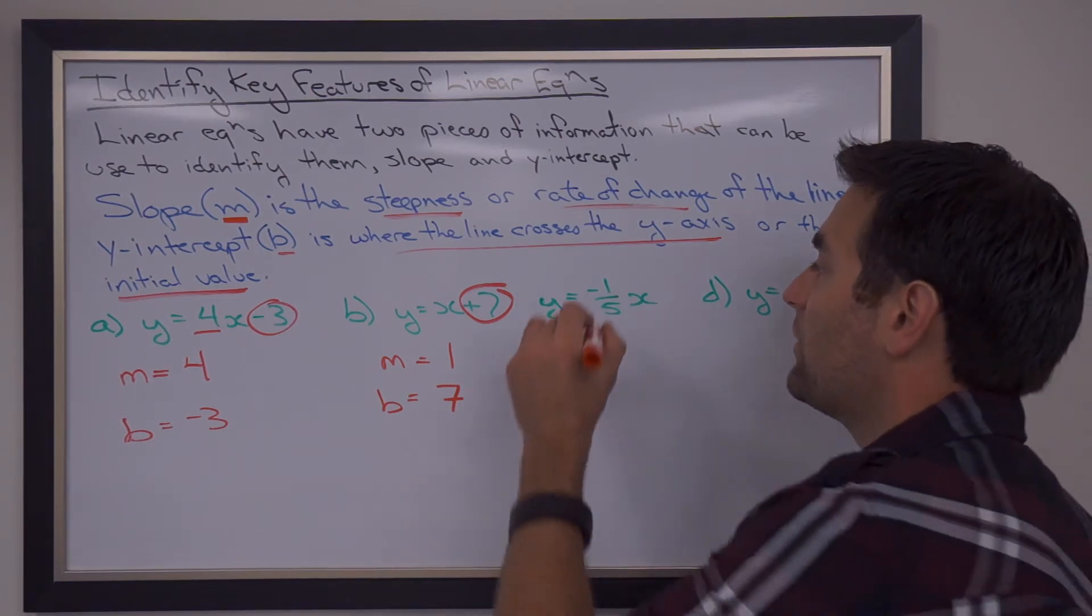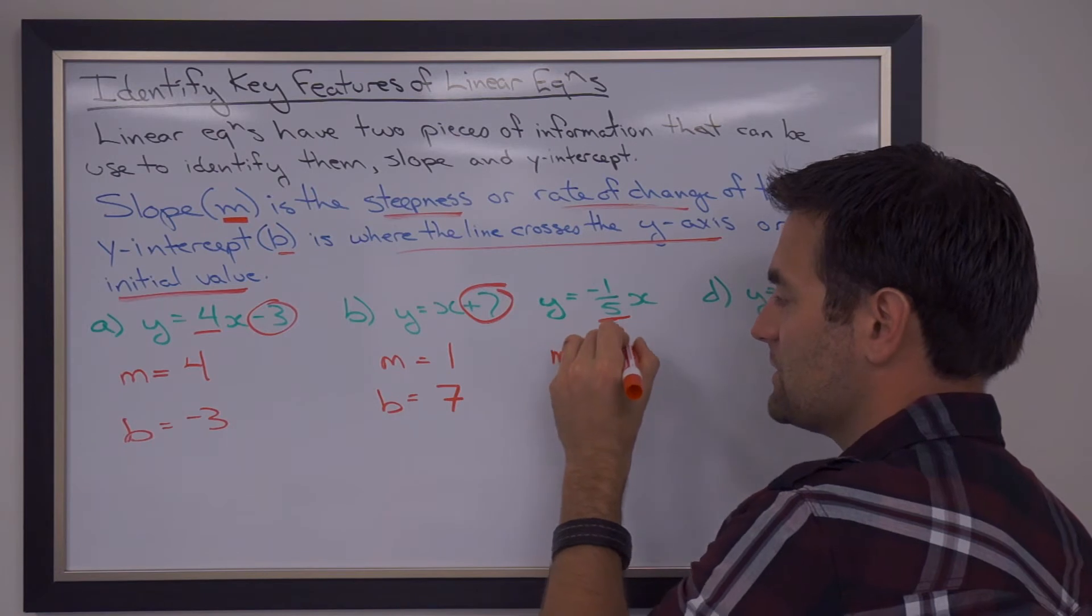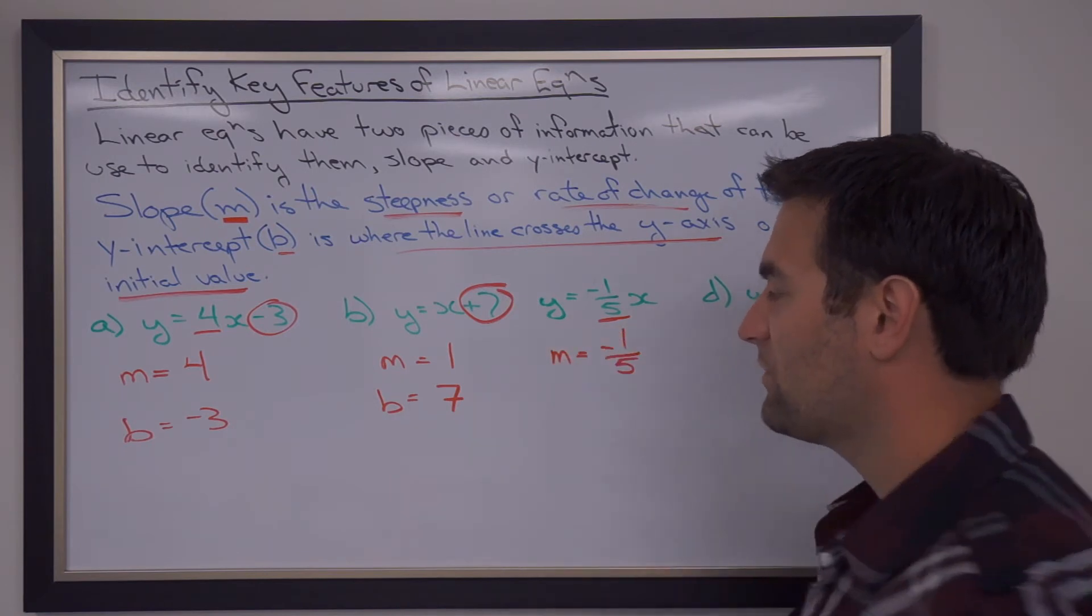Well, that means that we have a slope here of negative 1 fifth. It's the number beside the X, so the slope is negative 1 fifth.